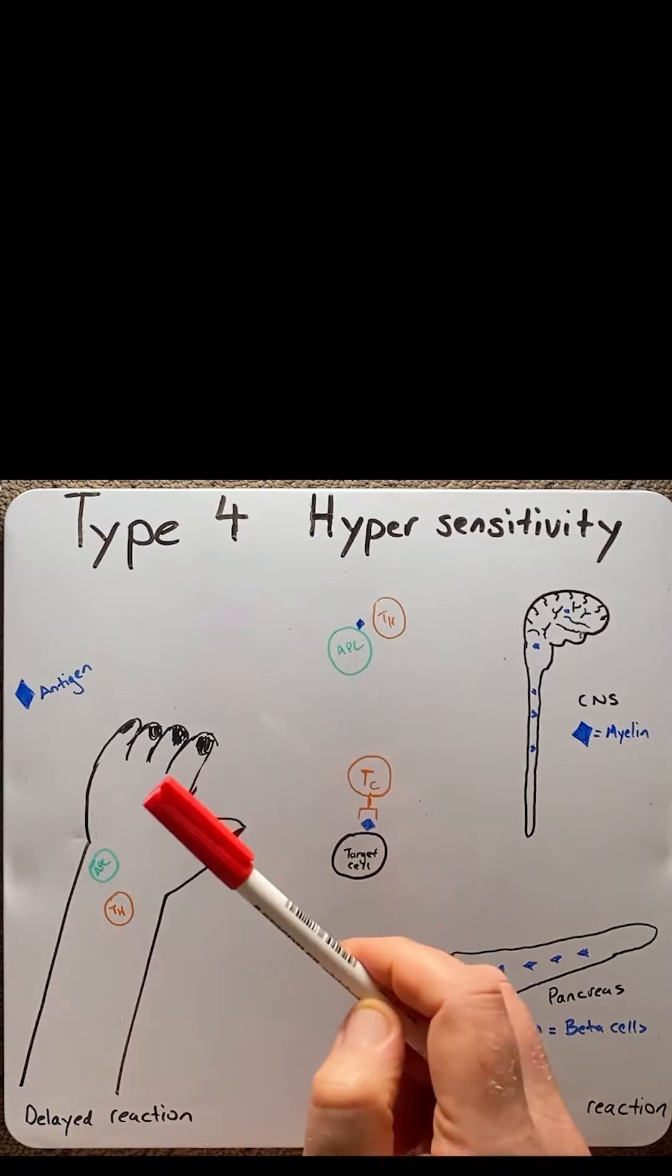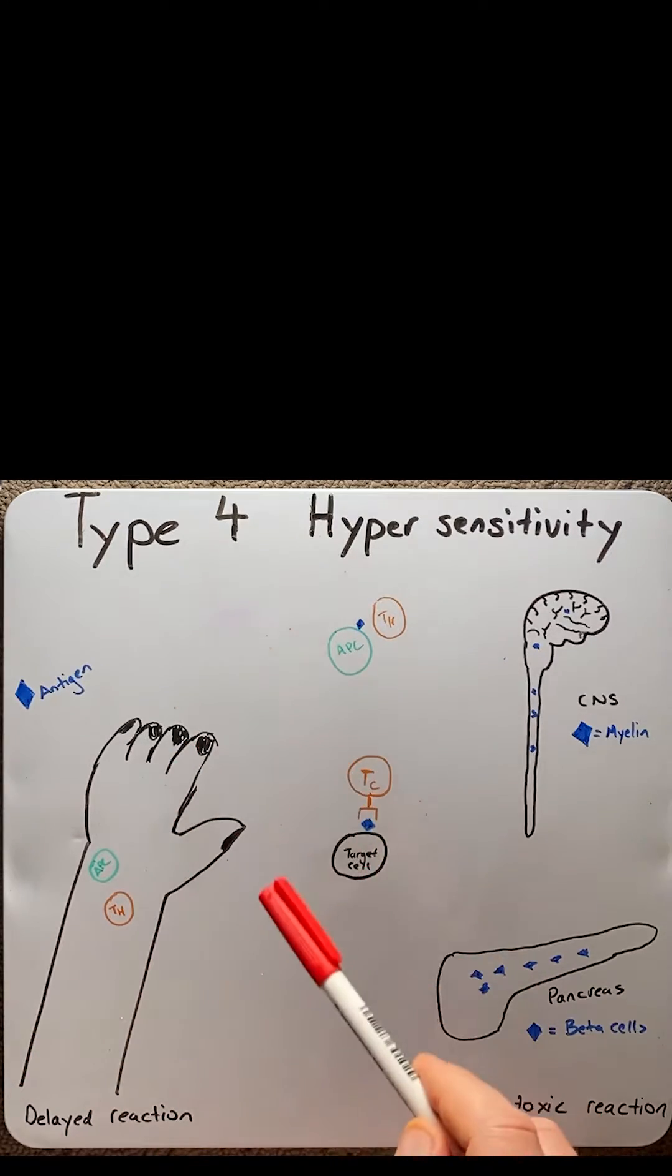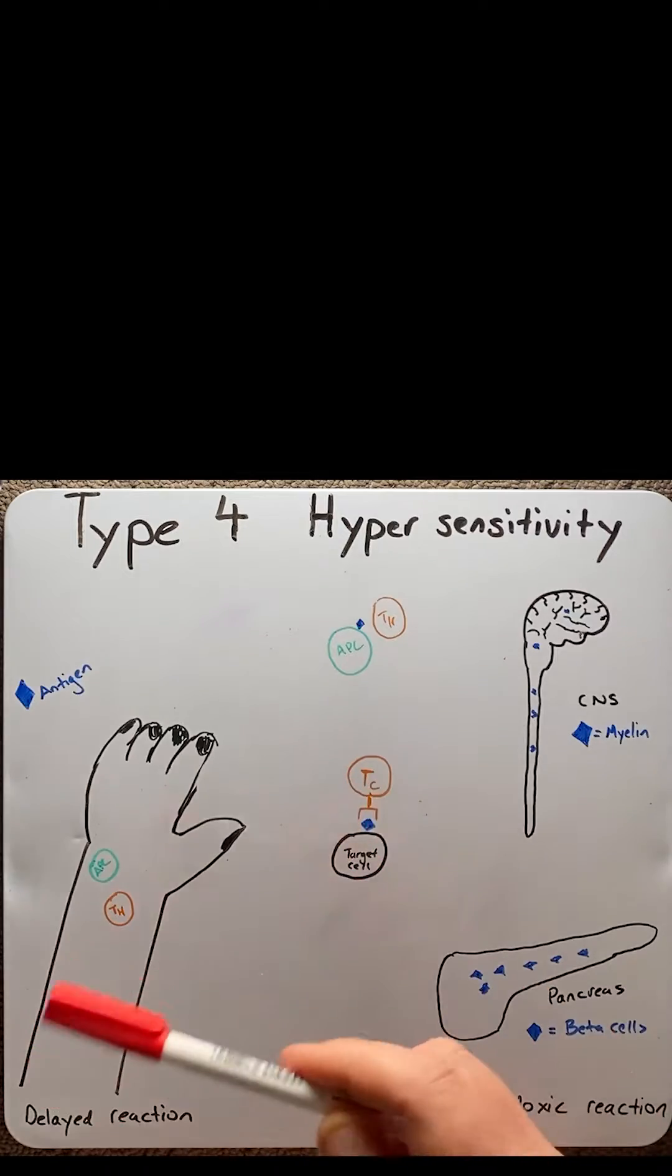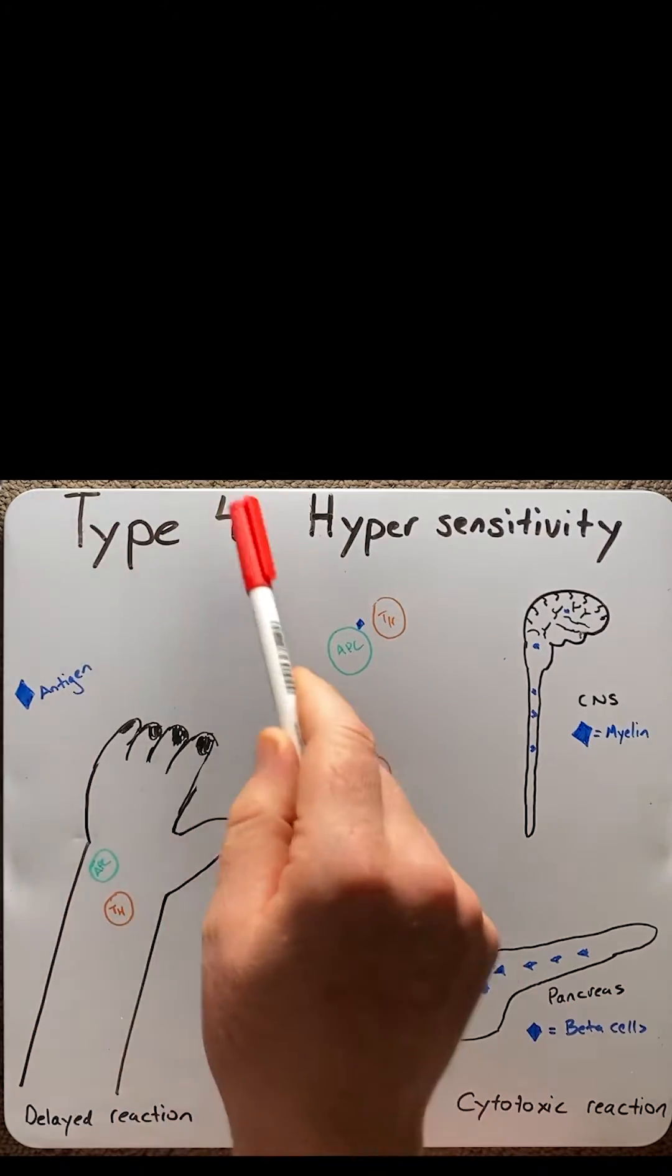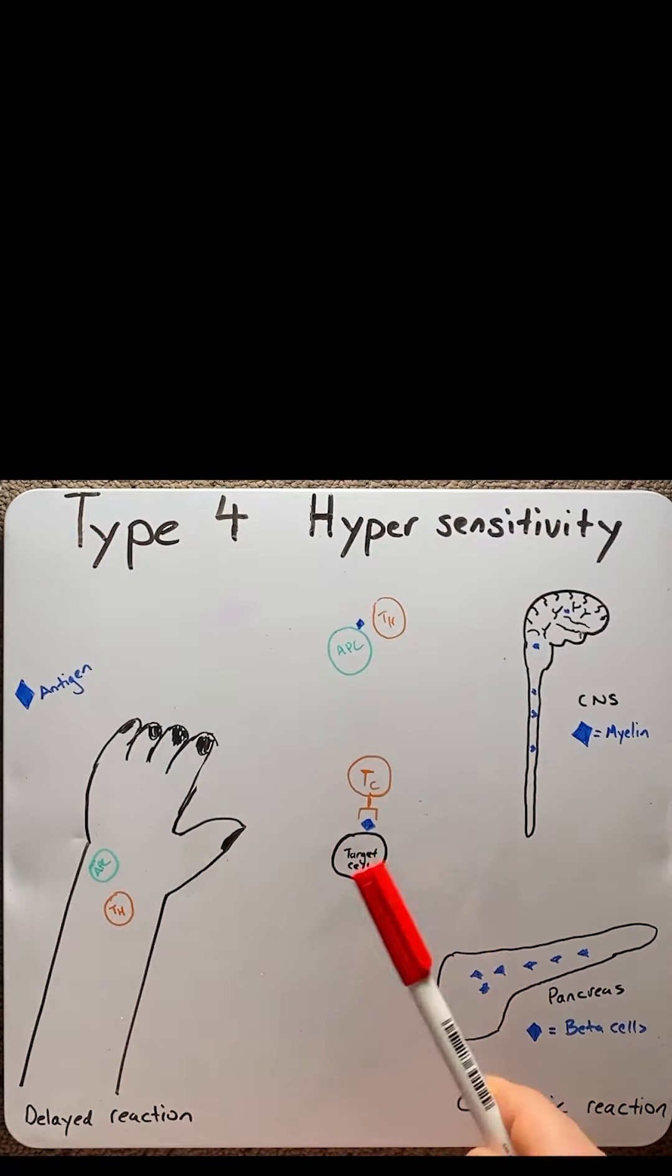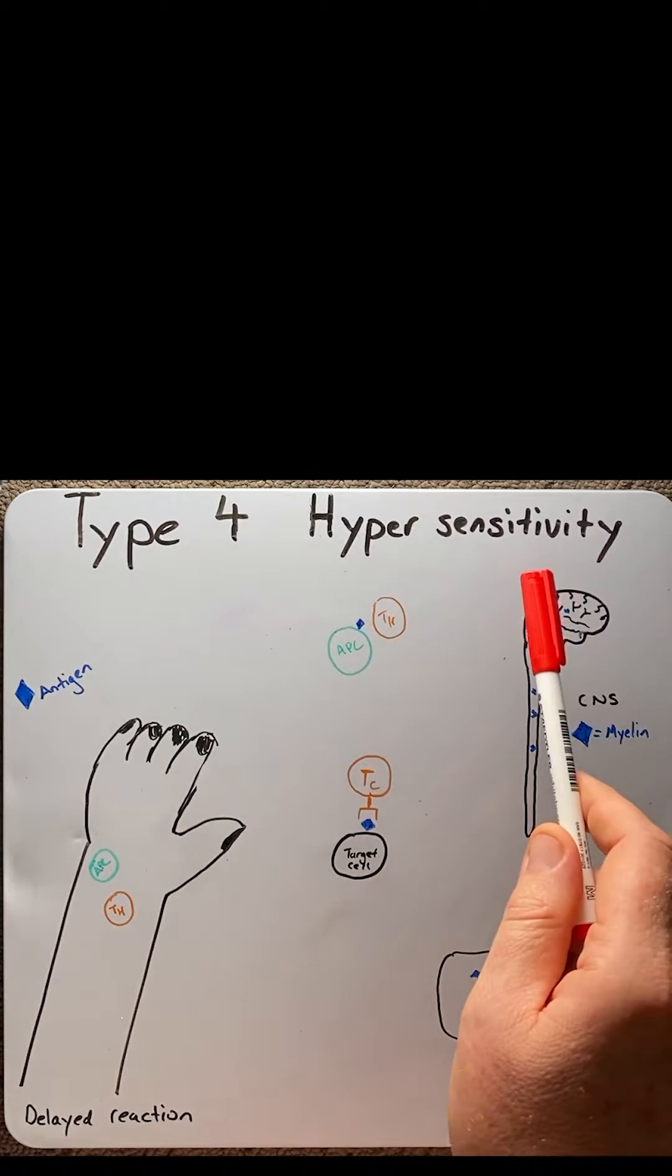Another difference is the immune cell that they use are T-cells rather than antibodies that we saw in the other three types. Therefore, another name that's commonly used for type 4 is cell-mediated hypersensitive disorders.